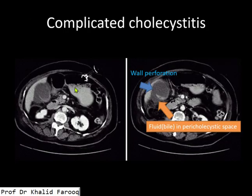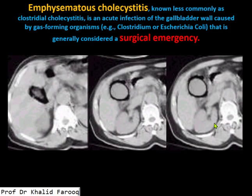Here we see a complicated cholecystitis where there is perforation of the wall of the gallbladder and bile is extravasated. Complicated cases can be assessed with the help of ultrasound and CT, but CT is the better modality for their assessment. This is an example of emphysematous cholecystitis, which is basically a surgical emergency and is produced by gas-forming organisms.